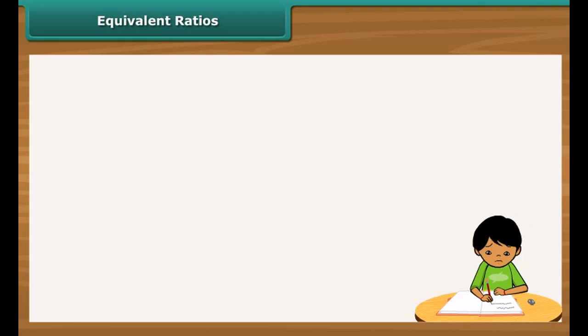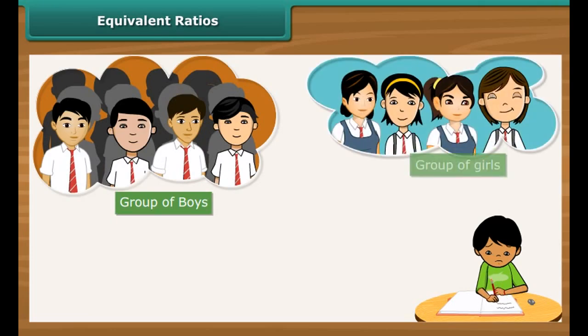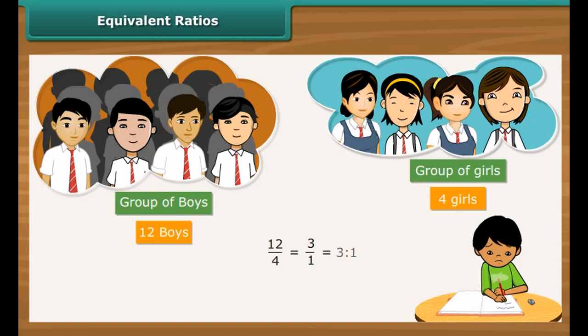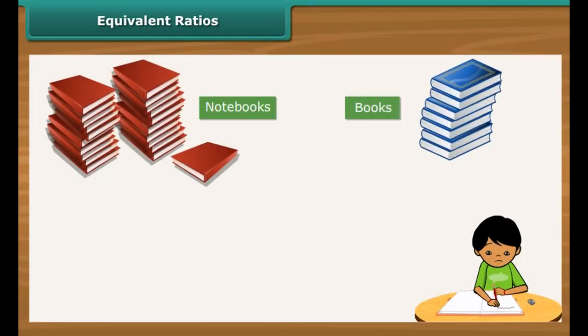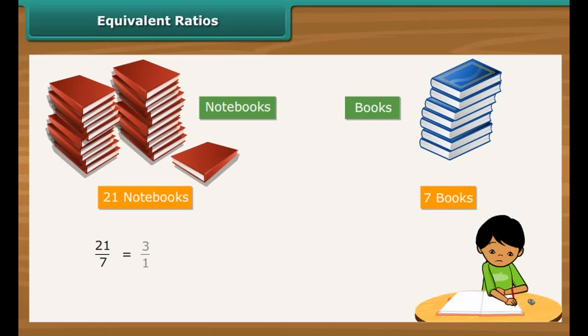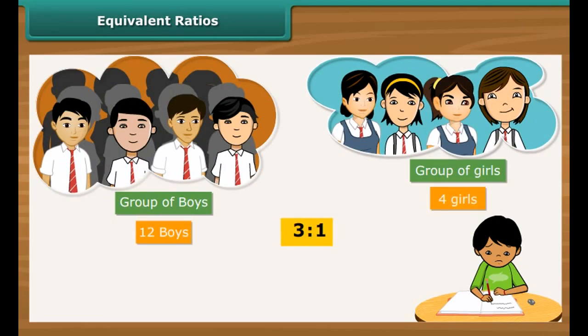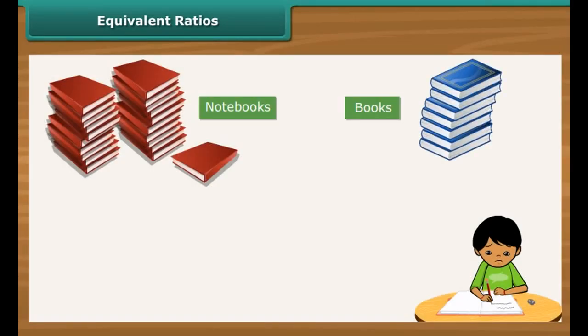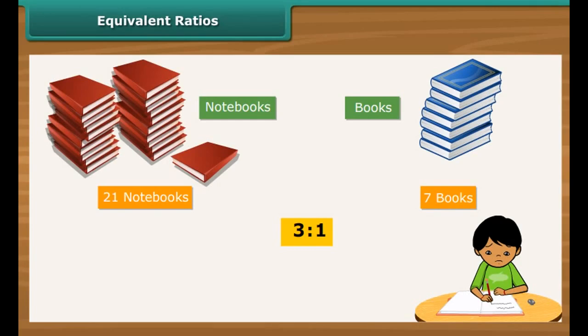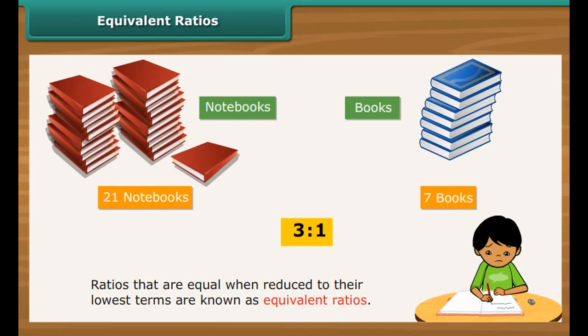Ritesh is learning to calculate ratios and is enjoying it, but there is one thing confusing him. He calculated the ratio of boys to girls in his class as 3 is to 1. He then calculated the ratio of notebooks to books in his bag, which also works out to be 3 is to 1. Ritesh wonders: can two ratios be the same? Yes, they can. Boys are 3 times more than the girls; notebooks are 3 times more than the books. Ratios that are equal when reduced to their lowest terms are known as equivalent ratios.